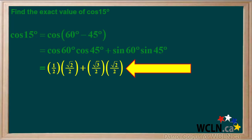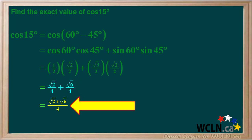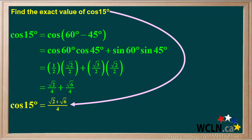So we have this expression. Doing the multiplications in each term gives us √2/4 + √6/4. This simplifies to (√2 + √6) / 4. So we can state that cos 15° = (√2 + √6) / 4. You can verify this with a calculator if you like.